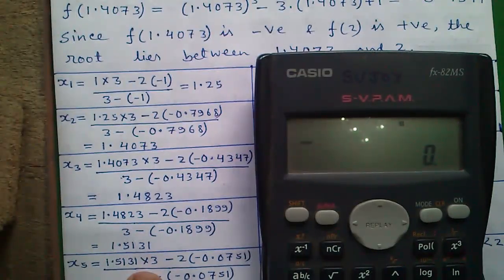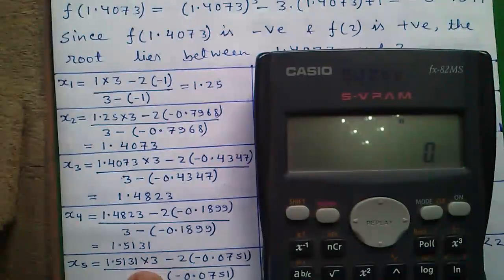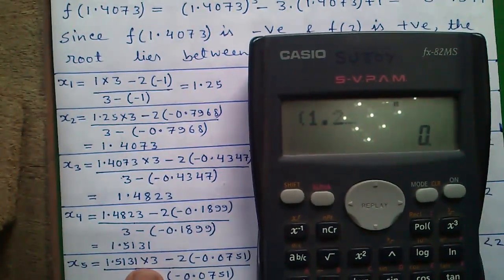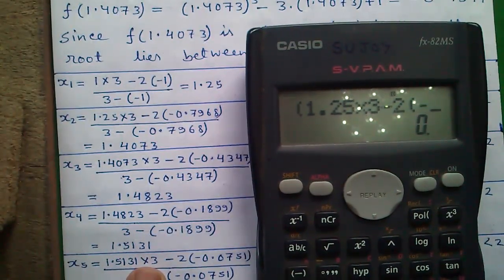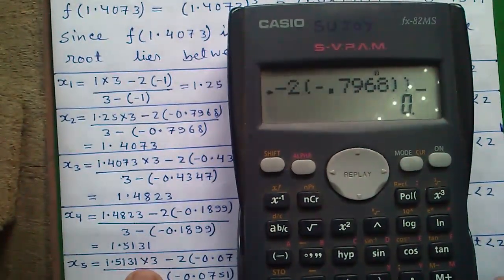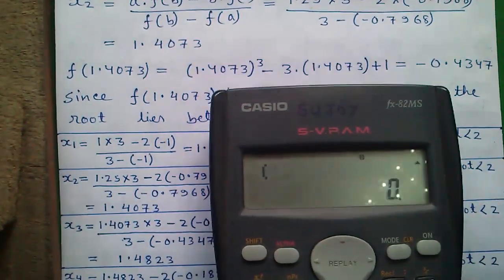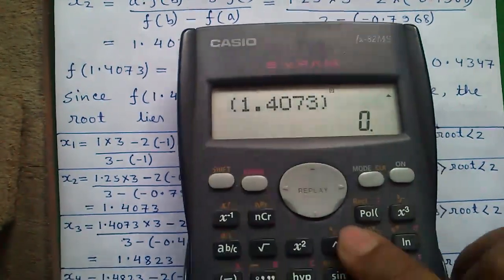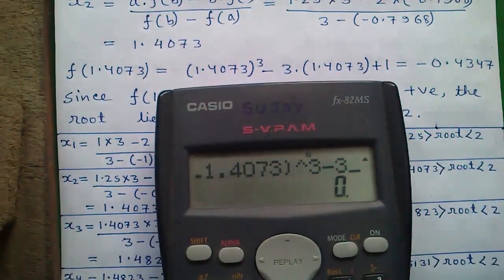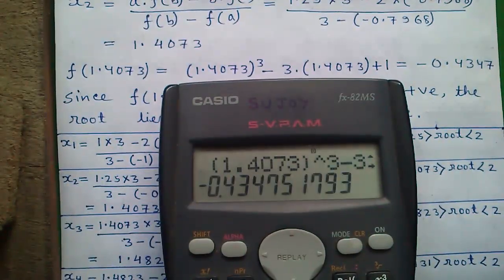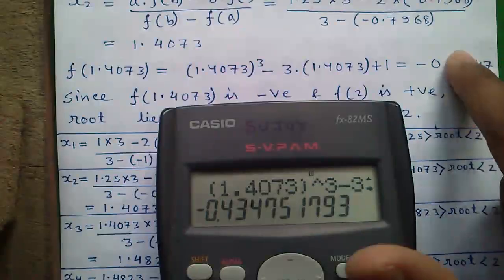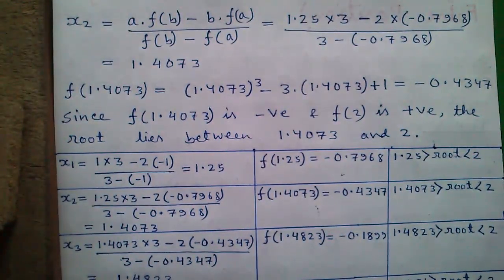So the calculations you did on Casio FX-991ES calculator you can also do on FX-82MS calculator. I will show you how. To calculate this press the left parenthesis 1.25 into 3 minus 2 into first bracket minus 0.7968 first bracket divided by first bracket 3 minus minus 0.7968 first bracket and press equals to. So which is 1.4073, and to calculate this press first bracket 1.4073 first bracket close to the power button and 3 that means x cube minus 3 times 1.4073 plus 1 press equals to button so which is -0.4347. All the calculations you did on Casio FX-991ES you can also perform on FX-82MS calculator except the finding out answer without doing the math.